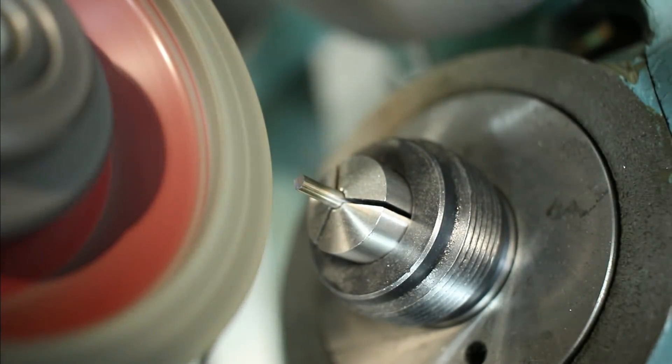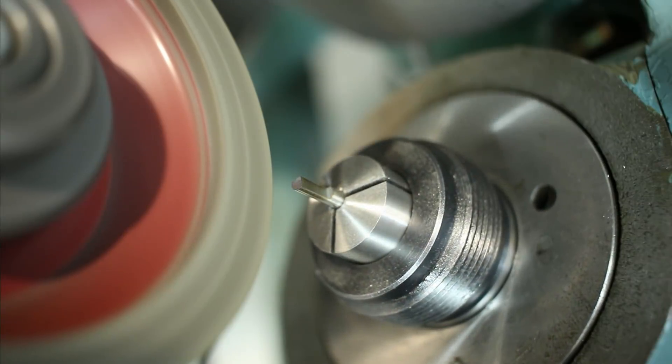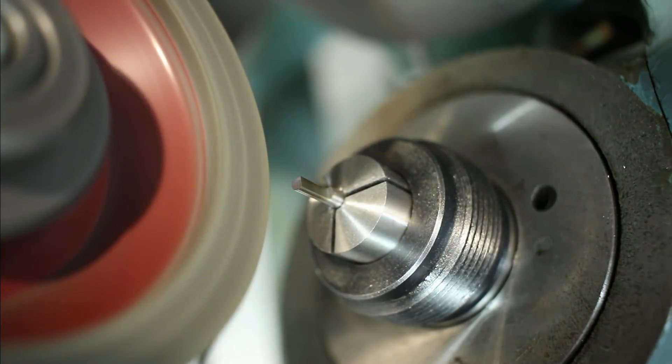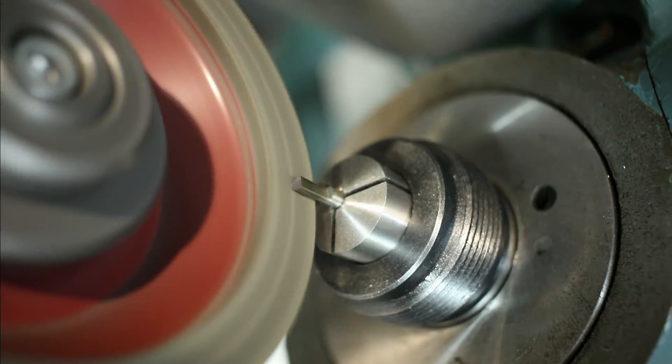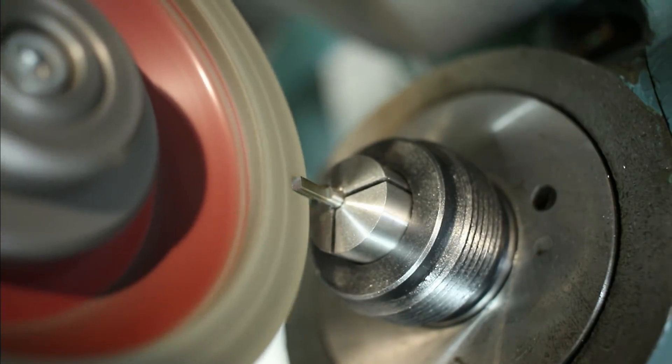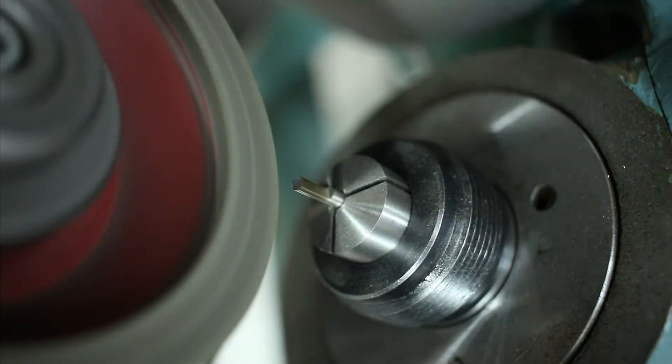It's almost impossible to anneal them back to a soft state just by heating them up. Even if you hit them with an oxy fuel torch you basically cannot anneal them. After they cool down they will just be as hard as before or even slightly harder.